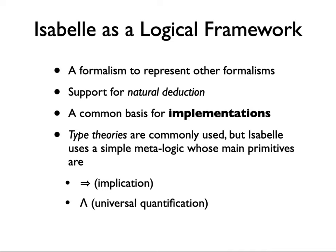The earliest work on logical frameworks involved various kinds of type theories, but Isabelle uses a much simpler foundation. At the lowest level, there's an arrow you've seen many times in subgoals — typically separating induction hypotheses from the conclusion — and that funny wedge symbol, which is a kind of big lambda, representing a kind of universal quantification. You've seen it in inductive subgoals where it binds the local variables. Strictly speaking, these are the implication and universal quantifier of the metalogic in which all other stuff is encoded.